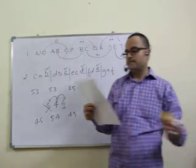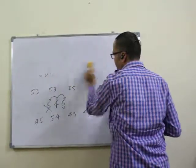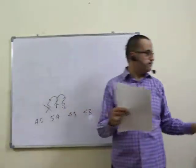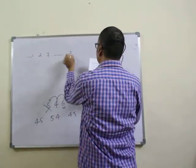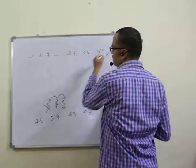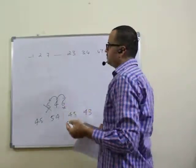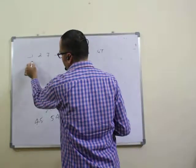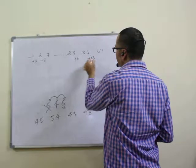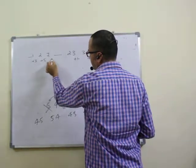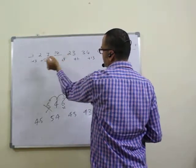Question five is based on a number series: minus one, two, seven... we need to find 23, 34, 47. The differences are plus three, plus five, plus seven — gradually increasing by plus two each time. So the next difference should be nine: seven plus seven is 14, 14 plus nine is 23. Answer is 14 — fifth question, second option.